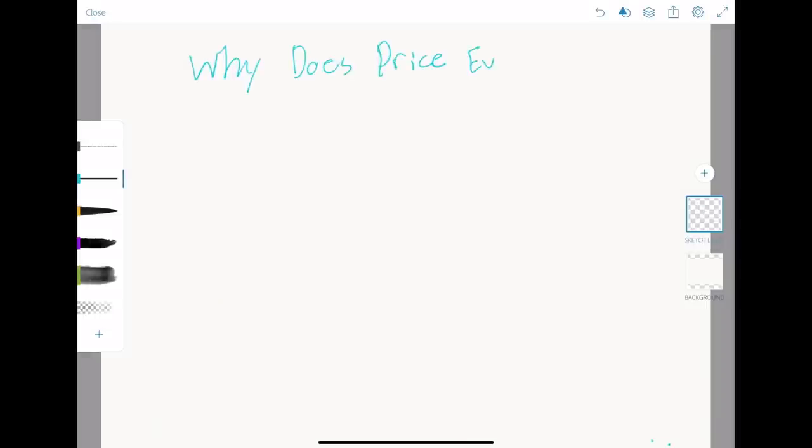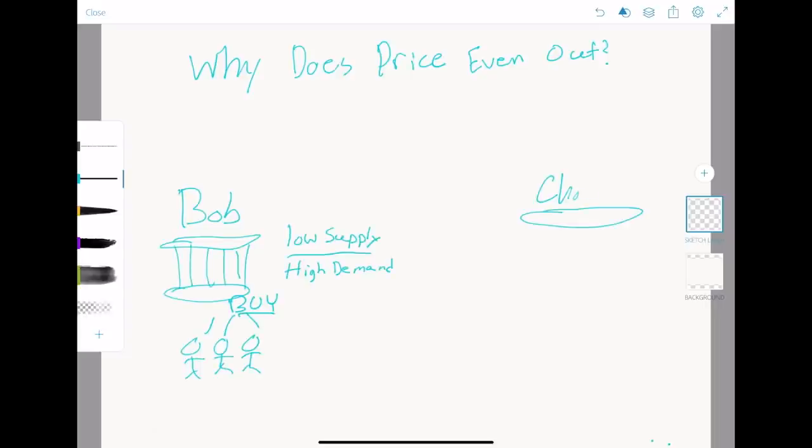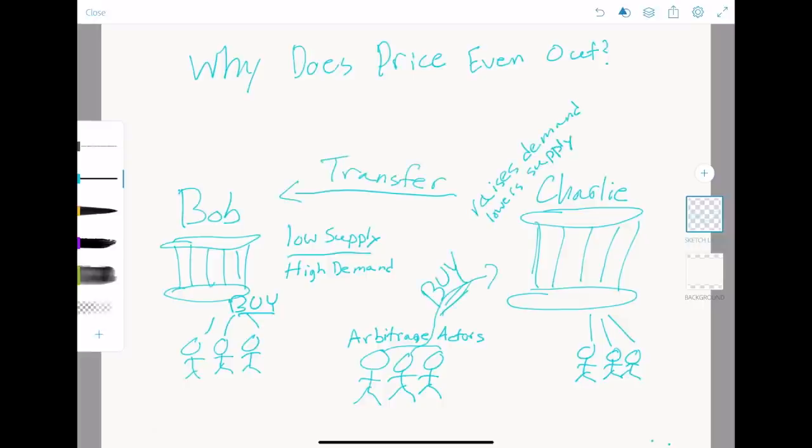Why does the price even out? Because as Bob's Bitcoin rises in value, arbitrage actors begin flooding other markets with buy orders and likewise flooding Bob's market with sell orders of the Bitcoin they had just purchased and transferred over from a different market. If the price does not correct itself, arbitrage actors will simply continue this process forever, basically printing money until the supply and demand across the two exchanges are equal.